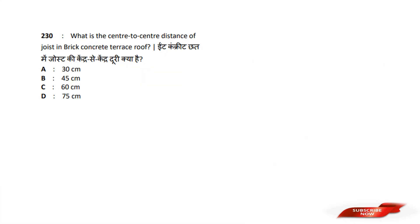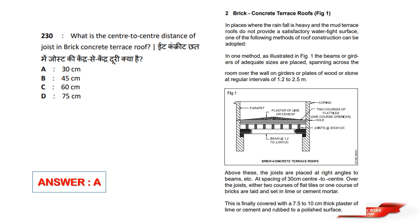What is the center-to-center distance of the joist in a Brick Concrete Terrace Roof? Options are: A) 30 cm, B) 45 cm, C) 60 cm, D) 75 cm. Answer option A — 30 cm. Center-to-center spacing is 30 cm.